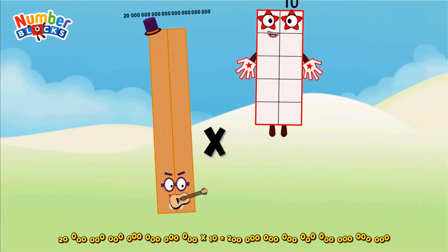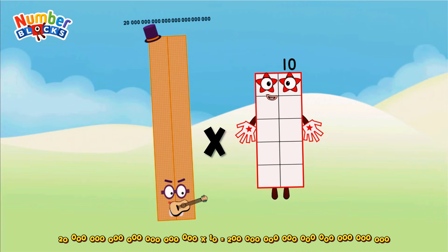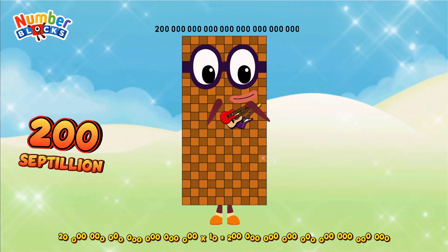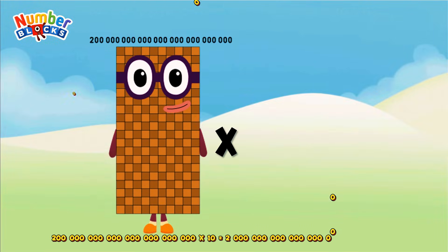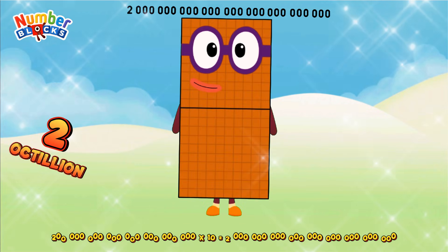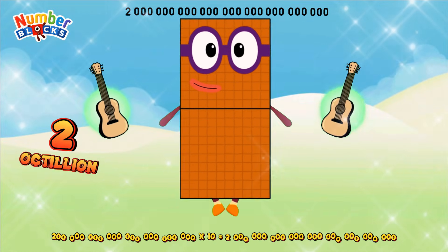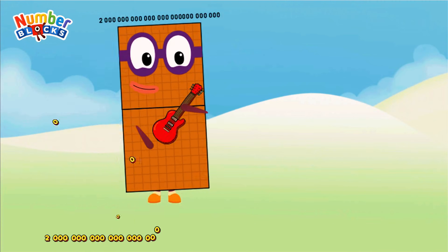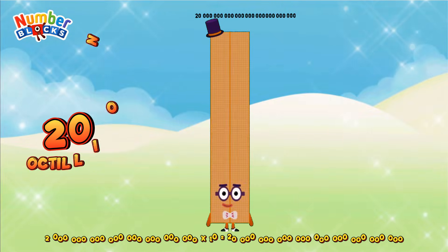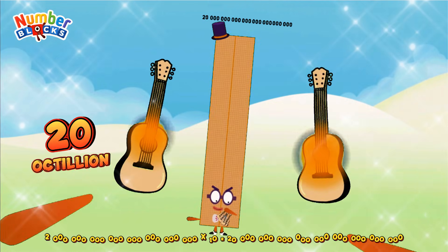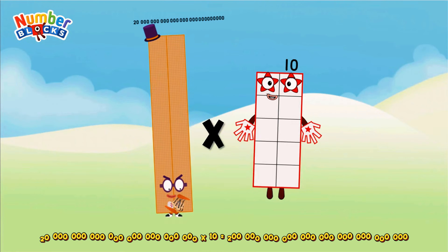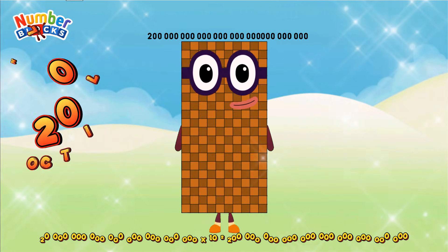20 septillion, multiplied by 10, equals two hundred septillion. Two hundred septillion, multiplied by 10, equals two octillion. Two octillion, multiplied by 10, equals twenty octillion.